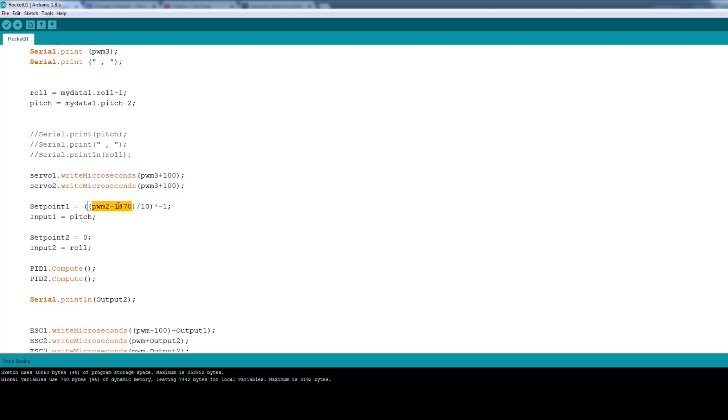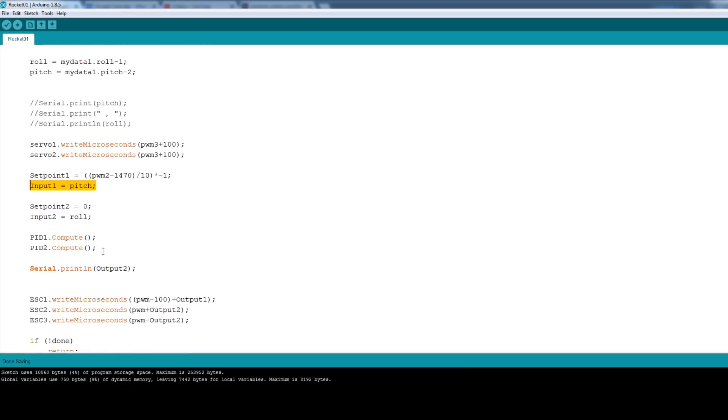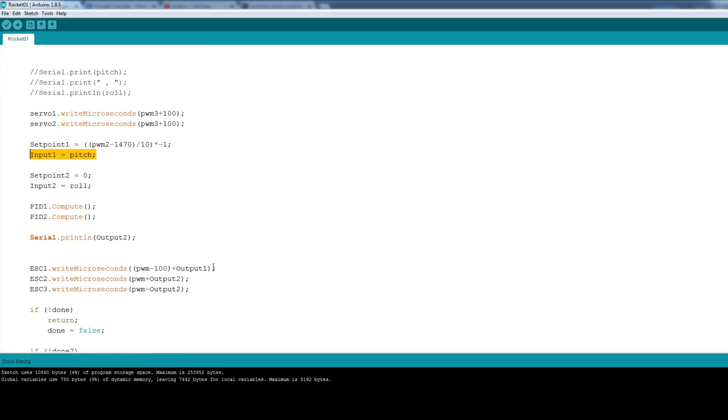So for that one ESC stuck out on its own, the set point is, in fact, one of the sticks, compensated for zero and scaled to match the scale of the IMU, and then I've inverted it as well, so it works the right way round. The input of that PID controller is actually the pitch from the IMU, and then, obviously, we compute it. And what I've done down here is just basically make sure that ESC runs slightly slower by taking 100 off the value, and then it varies in a plus or minus swing, depending on the output of that PID controller, and the value from that IMU.